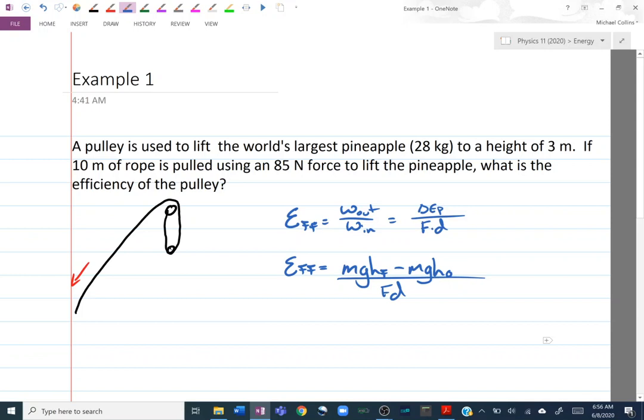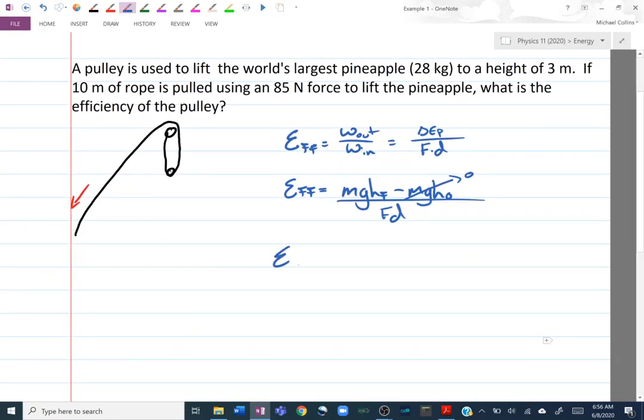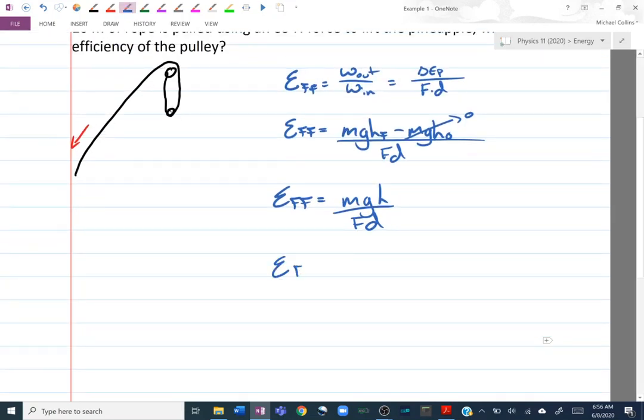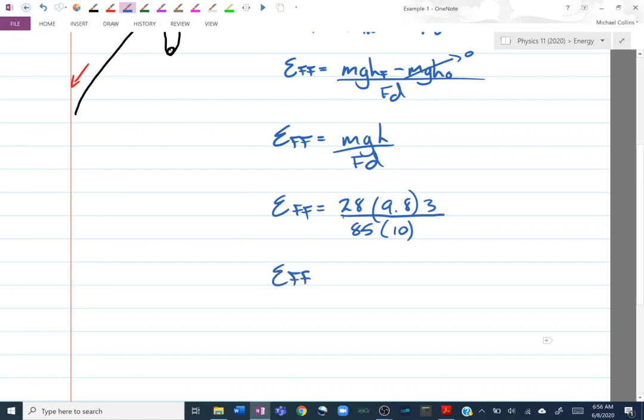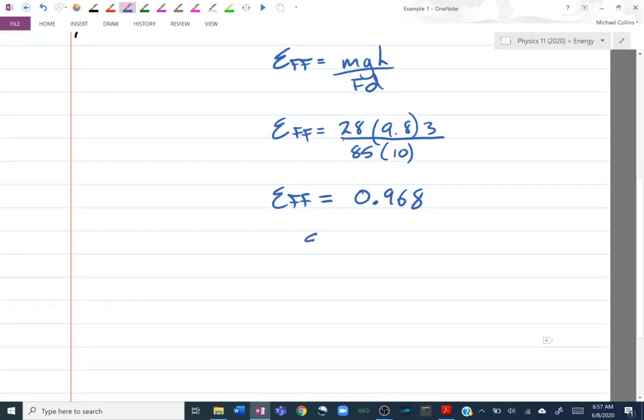If it's to a final height, our initial height will be zero. So then we get that our efficiency is equal to MGH over FD. So our efficiency of this particular pulley is the mass of our pineapple, 28. G is 9.8. The height is going to be three divided by my force, which is 85 times the distance that force is applied, which is 10 meters. If we plug it into a calculator, we should get that this pulley is 96.8% efficient. And I'm just going to back that up again. What we'll actually get if we plug this into our calculator is a 0.968. And notice how I've dropped that times 100%. What we want is we want to express this decimal as a percent. To express it as a percent, we just move the decimal over twice, 96.8% efficient.